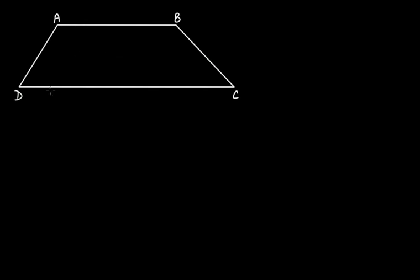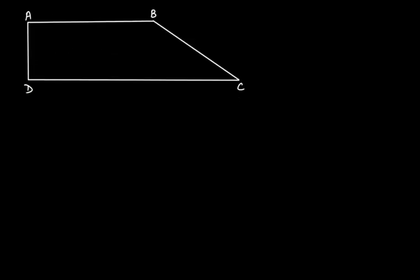You can clearly spot the difference between these two diagrams. Now, AB and CD are the two parallel sides of this trapezium. The line segment AB is parallel to line segment CD. Let's say that the length of line segment AB is A, and the length of line segment CD is B.